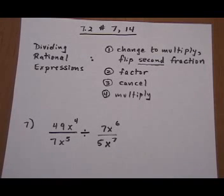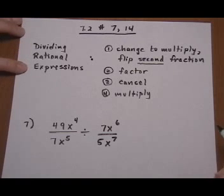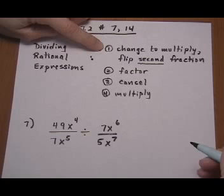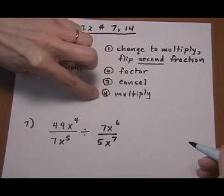Problem 7.2, numbers 7 and 14. Both of these problems have to do with dividing rational expressions. This is exactly the same as multiplying, with one step at the beginning. First we change it to a multiplication problem and flip the second fraction, or take its reciprocal. Then we follow the exact same steps as multiply: factor, cancel, multiply across numerators and across denominators.